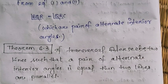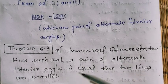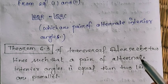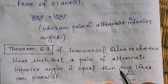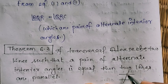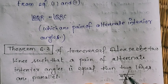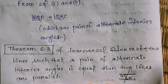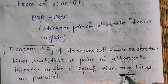Theorem 6.4 states that if a transversal intersects two parallel lines, then each pair of interior angles on the same side of the transversal is supplementary. If L1 is parallel to L2 and L3 is a transversal, then angles 1 plus 2 equals 180 degrees, and angles 3 plus 4 equals 180 degrees. The interior angles on the same side of the transversal are supplementary.